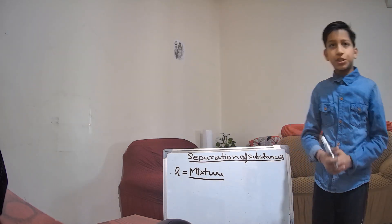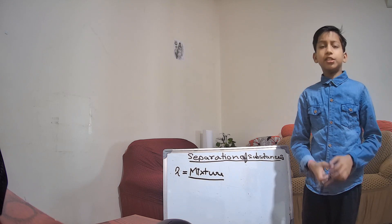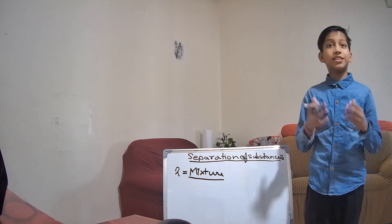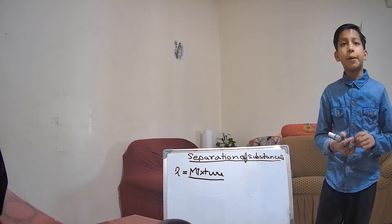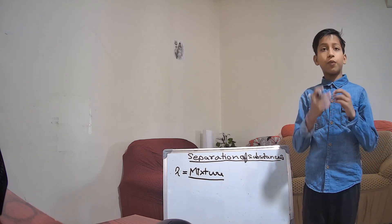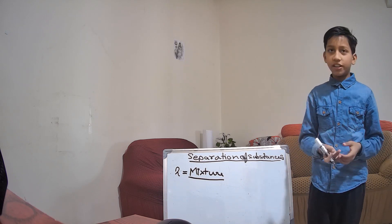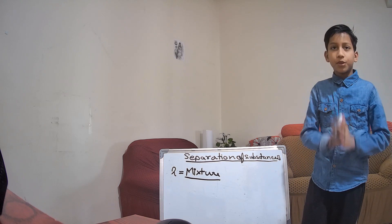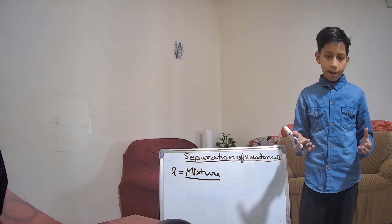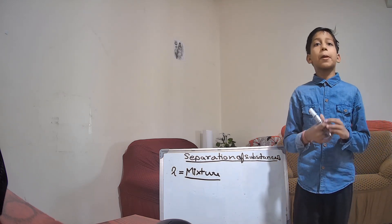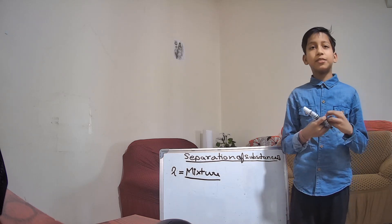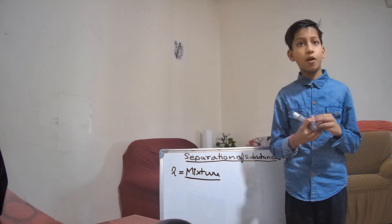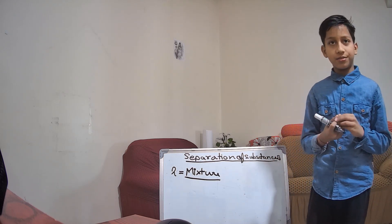What is a mixture? A substance that is made up of many types of particles is called a mixture. An example is milk — milk is made up of a mixture of fat, water, and other components.